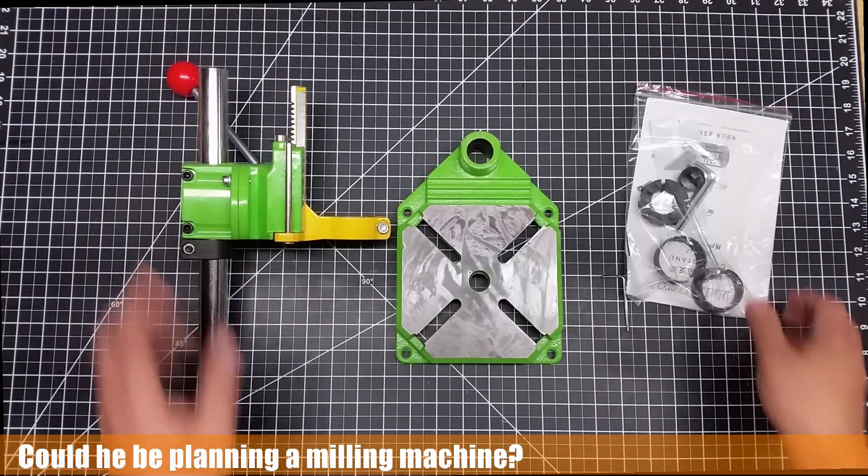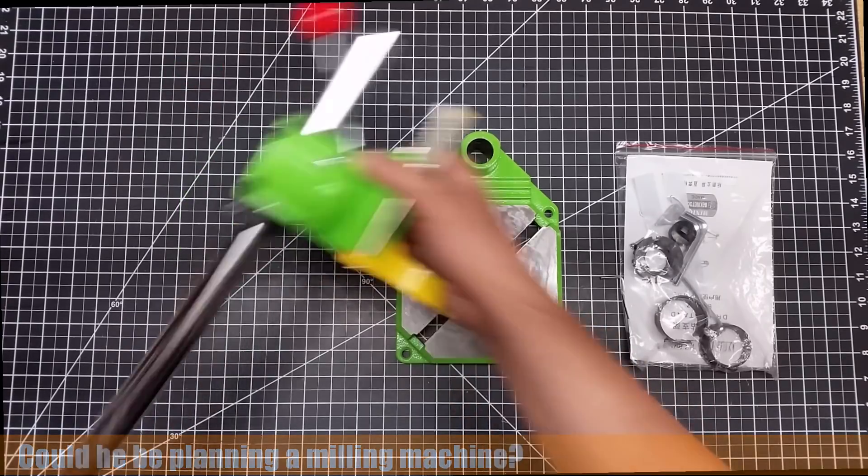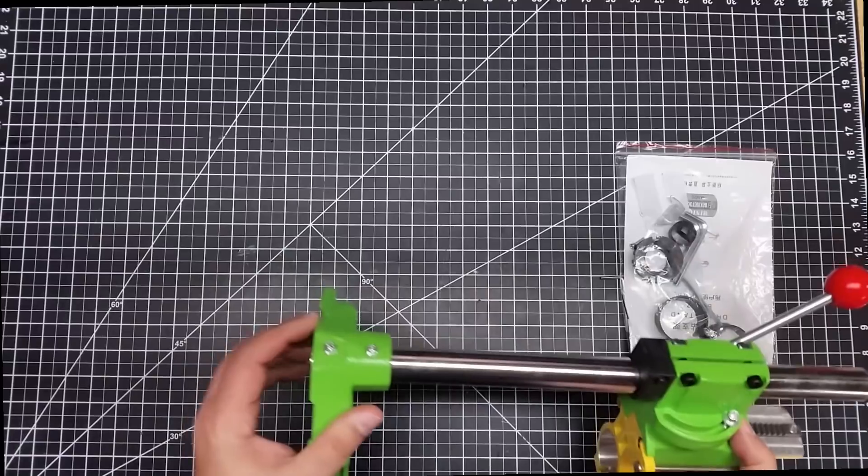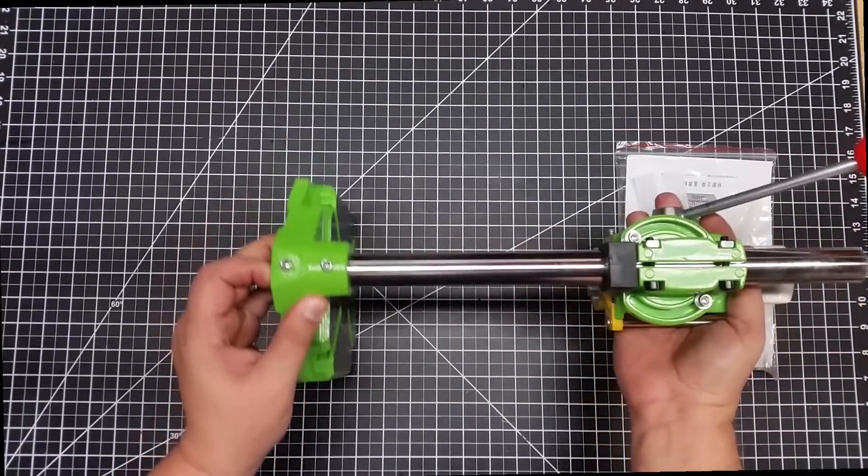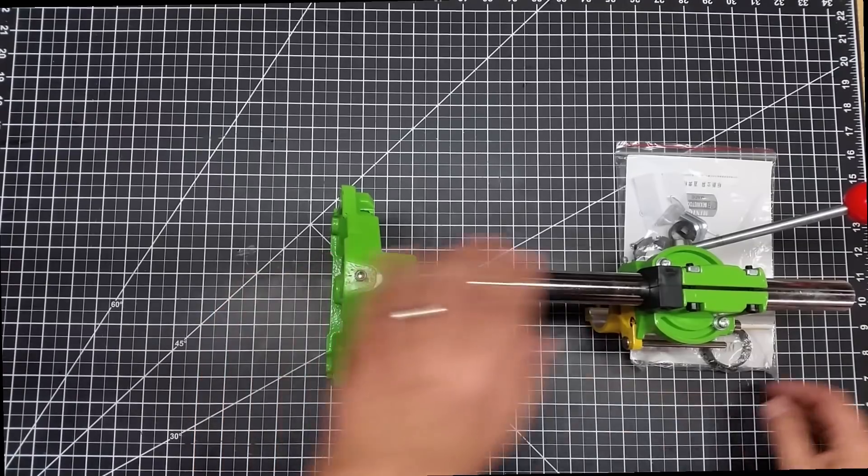Outside of that it's pretty simple. This just mounts in this base down here and it does have a pass through and it does have some hex bolts.